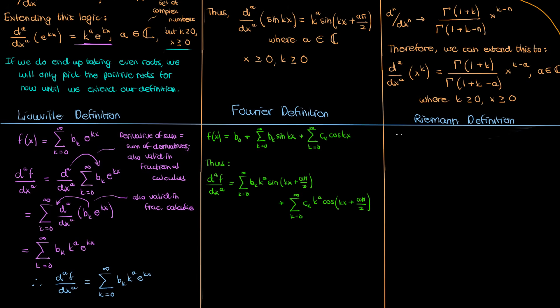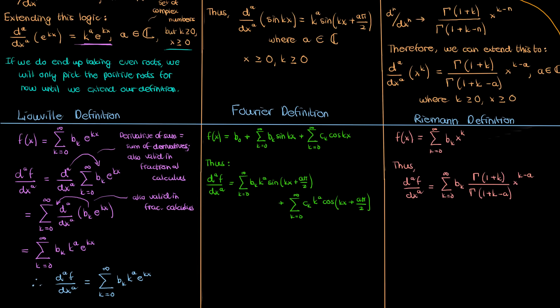Finally, let's elaborate on the Riemann definition of the fractional derivative. We write our generic function f of x as an infinite series of polynomial terms — basically the Taylor series of f of x. Using the same algebra techniques as before, we can show that the fractional derivative of f of x by the Riemann definition is given by a corresponding expression. So we've now formulated three different definitions for the fractional derivative. In the next video, I'll derive a fourth definition called the Caputo definition, and show that these four definitions don't necessarily give the same answer.